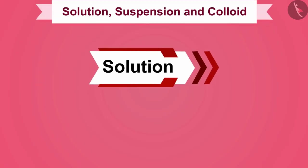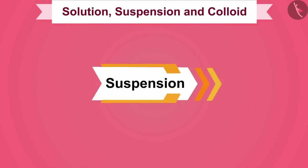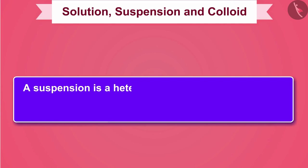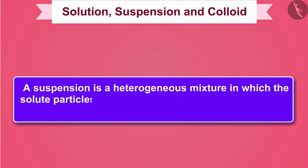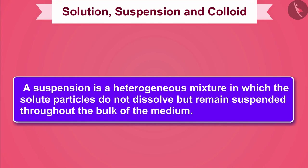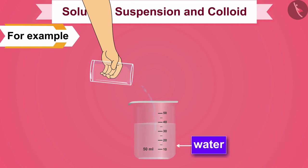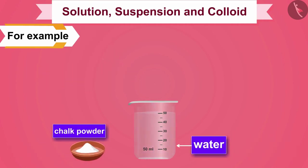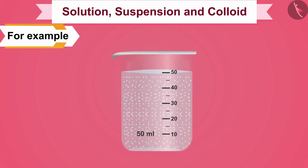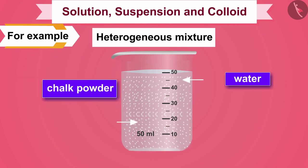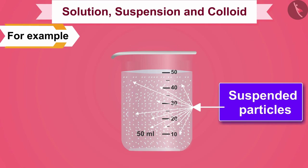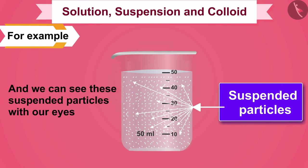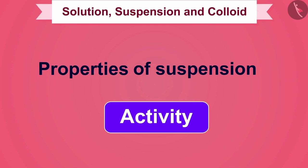Now that we have learned about solutions, let us learn about suspension. A suspension is a heterogeneous mixture in which the solute particles do not dissolve but remain suspended throughout the bulk of the medium. For example, take 50 ml of water in a beaker and dissolve one teaspoon of chalk powder with the help of a glass rod. This solution is a heterogeneous mixture in which the solute does not dissolve but remains suspended throughout.